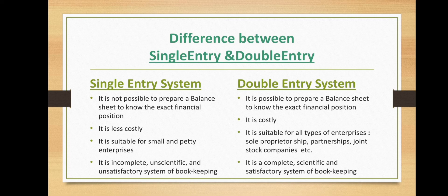The last point is that a Single Entry system is incomplete, unscientific, and an unsatisfactory system of bookkeeping, as it does not prepare all books of accounts or follow particular standards and principles. But in the case of a Double Entry system, it is complete, scientific, and a satisfactory system of bookkeeping, as it prepares all books of accounts and uses established concepts, conventions, and principles.